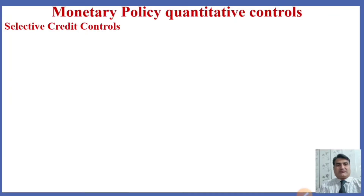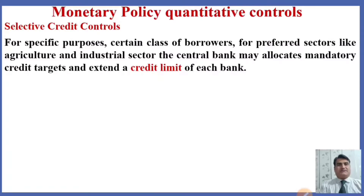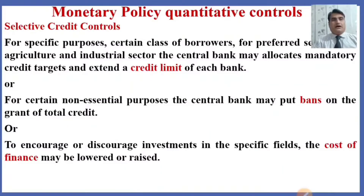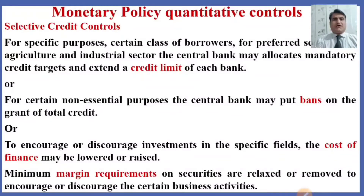Another quantitative control is selective credit control. For specific purposes or certain classes of borrowers — for preferred sectors like agriculture and the industrial sector — the central bank may allocate mandatory credit targets and extend the credit limit of each bank. For certain non-essential purposes, the central bank may put bans on the grant of total credit. To encourage or discourage investments in specific fields, the cost of finance may be lowered or raised, and minimum margin requirements on securities may be relaxed or removed.